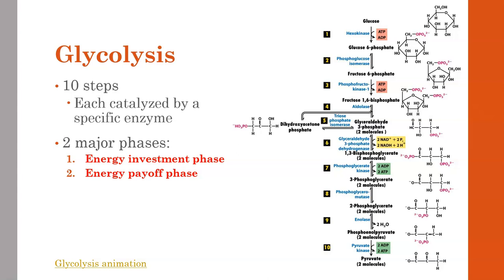If you recall from our previous chapter, enzymes typically end in -ase. So as you look at these blue words on the left—hexokinase, aldolase, enolase—these are all enzymes. If anything were to happen to one of those enzymes, it could compromise the entire process of glycolysis. That's bringing in a concept from before about the importance of enzymes in biochemical reactions.